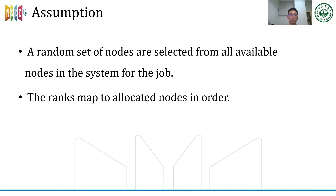Therefore, our optimizations are based on two assumptions. First, we assume that a random set of nodes is selected from all available nodes in the system for the job, meaning no limitation for the scheduler. Second, we assume that ranks map to the allocated nodes in order rather than random mapping. Although random mapping can eliminate the contention introduced next, it will decrease the performance of neighboring communication. In addition, many programmers assume that neighboring processes are located in neighboring places in the network. Thus, we prefer to preserve the performance of neighboring communication.